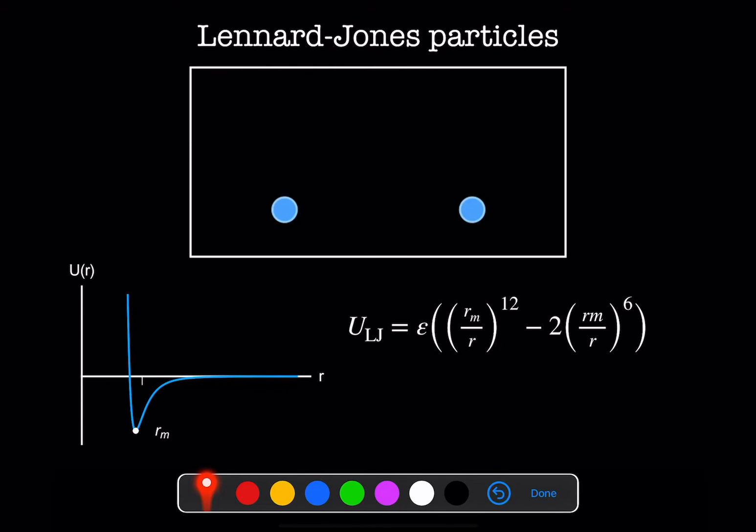It actually looks like this. It has a repulsive term that goes like 1 over r to the 12th. So that's giving us this really steep, sharp, repulsive part here. And it has an attractive piece that goes like 1 over r to the 6th. And that's responsible for this minimum and the particle radius being set here at r_m.